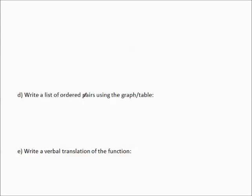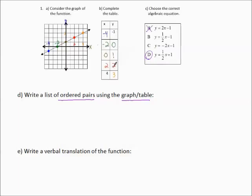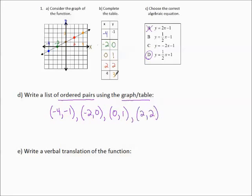Let's write a list of ordered pairs using the graph or table. I find it easiest to use the table. The ordered pairs are: (−4, −1), (−2, 0), (0, 1), (2, 2), and (4, 3). We can translate what we have into a variety of different organized representations. I'll put set notation because this is a set of ordered pairs.